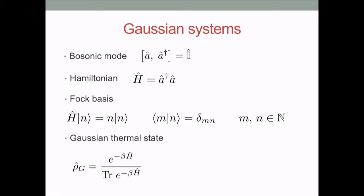We consider the Hilbert space of one harmonic oscillator, or one mode of the electromagnetic radiation. A will be the ladder operator of this Hilbert space that satisfies the well-known canonical commutation relation. This system is meant as the Hilbert space of one mode of electromagnetic radiation, and the Hamiltonian is the one that counts the number of photons. Once we introduce this Hamiltonian we can diagonalize it, and its eigenbasis is the famous Fock basis. It is well known that this Hamiltonian has integer spectrum.